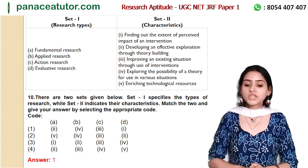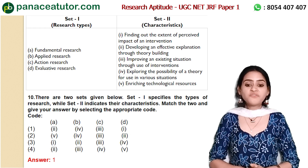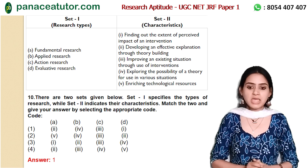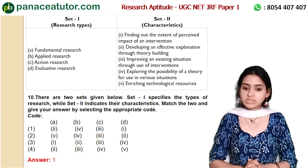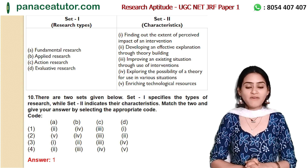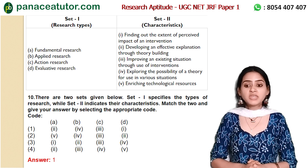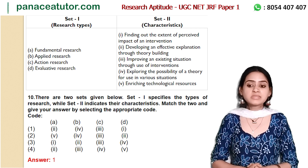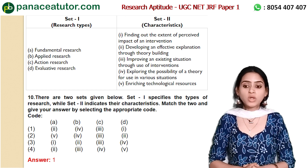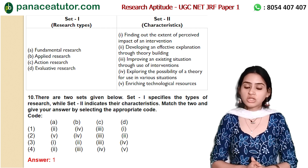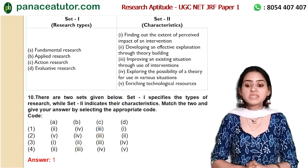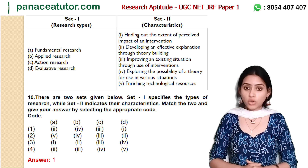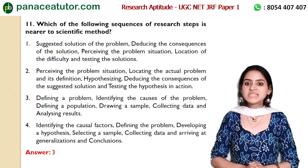In the next question, two sets are given. Set 1 specifies the type of research: A is fundamental research, B is applied research, C is action research, and D is evaluative research. Set 2 indicates the characteristics: 1 finding out the extent of perceived impact of an intervention, 2 developing an effective explanation through theory building, 3 improving an existing situation through use of interventions, 4 exploring the possibility of a theory for use in various situations, 5 enriching technological resources. We need to match the two sets using the codes given. Answer 1 is the correct answer for this question.